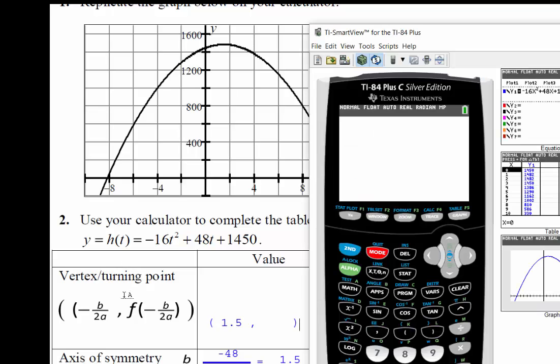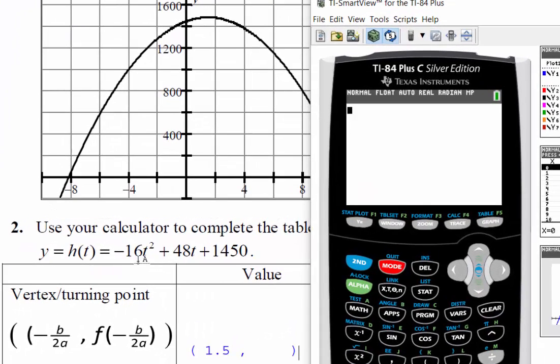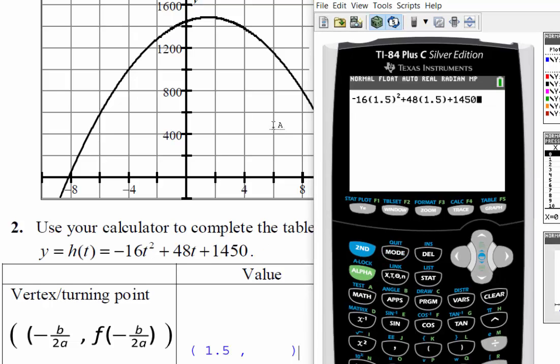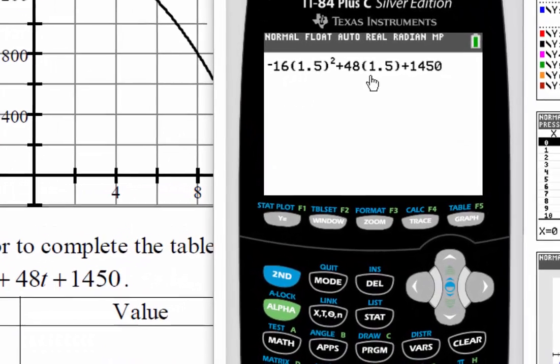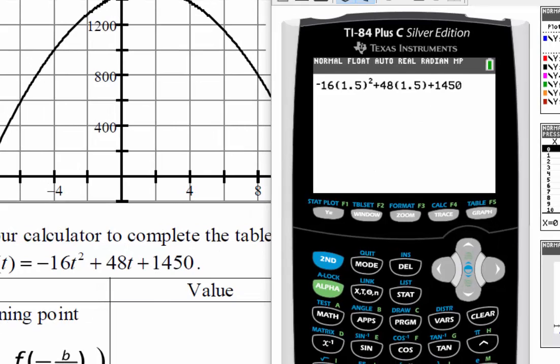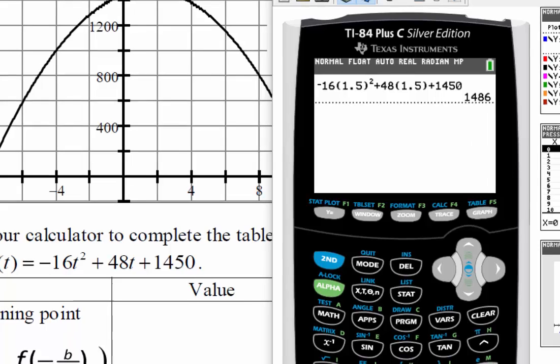So I'm going to enter negative 16 times 1.5 squared. Okay, so I'll just double checking that I entered this correctly. Negative 16 times 1.5 squared plus 48 times 1.5 plus 1,450. And I get 1,486 feet. All right, so that makes sense.